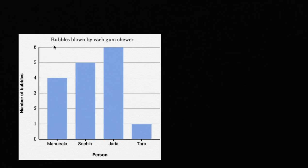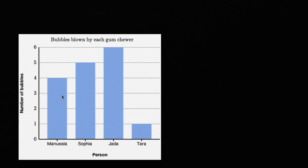This bar graph tells us the bubbles blown by each gum chewer. We have four different gum chewers, and it shows how many bubbles each of them blew. What I want to do is figure out the mean of the number of bubbles blown, and then figure out how disperse the data is — how much these values vary from the mean. I'm going to do that by calculating the mean absolute deviation.